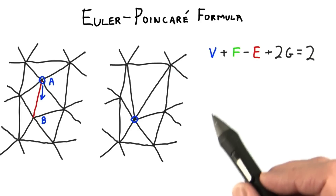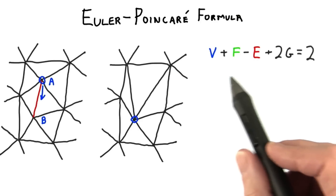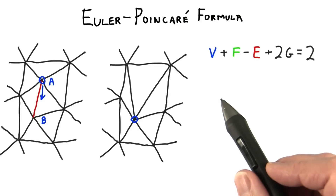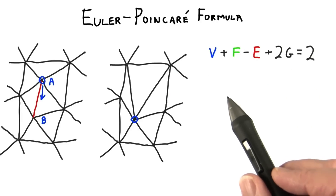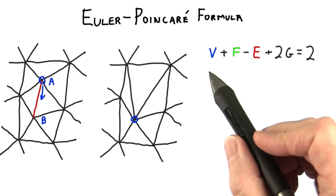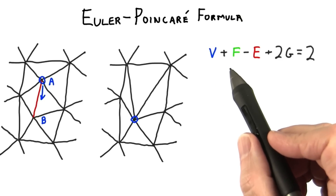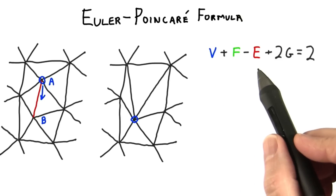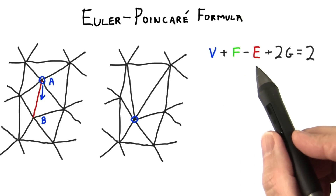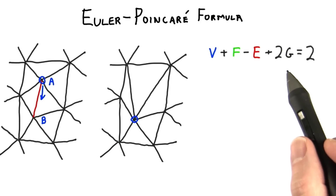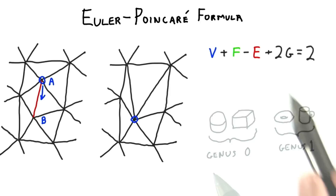The previous problem brings up a useful little formula from topology called the Euler Poincaré formula for connected planar graphs. V is the number of vertices, F is the number of faces, E is the number of edges, and G is the genus. The genus is the number of holes in the object.